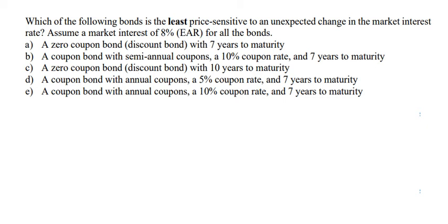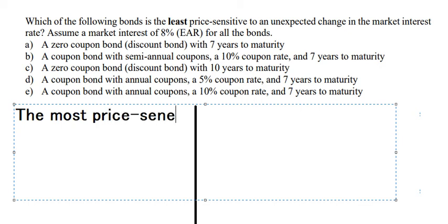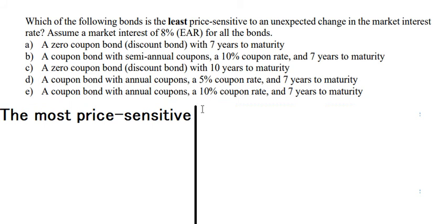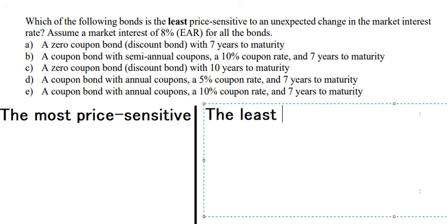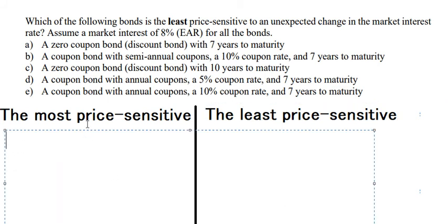Now I will show you how to answer. We need to create this table to compare the most rate sensitive and the least rate sensitive. We have the most rate sensitive and the least rate sensitive. The first criterion we need to know is about maturity.